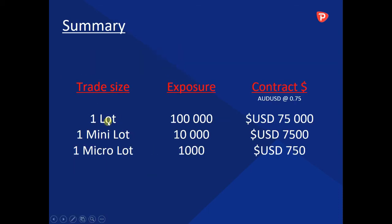Remember, 1 lot is just a name — this is your trade size. How much is your exposure for 1 lot? It's 100,000. And what is your contract value? Well, if we are trading Aussie against the US dollar at 75 cents, your contract value would be 75,000 US dollars.